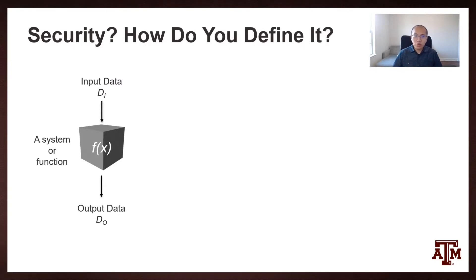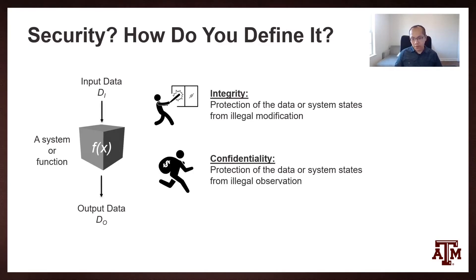So first of all, how do we define security? We can define security based on a few security properties. You can observe these security properties in systems or functions which take some input data, process it, and generate some output data. A few properties that people constantly talk about are integrity, which is defined as protection of the data or system state from illegal modifications. Another one is confidentiality, which is protection of data or system state from illegal observations. Besides these two, there are also other security properties such as availability.